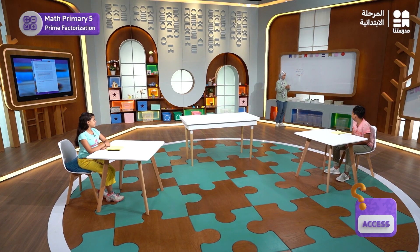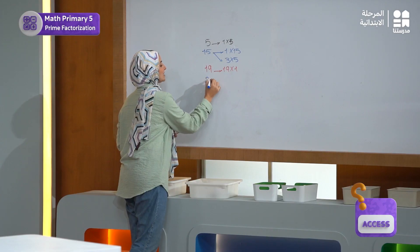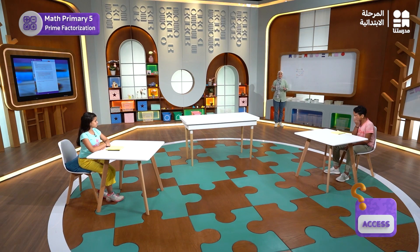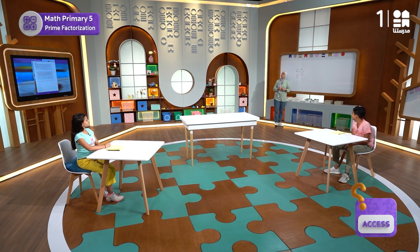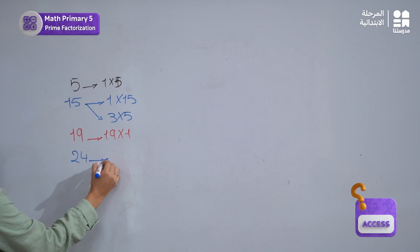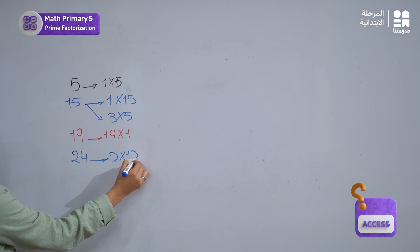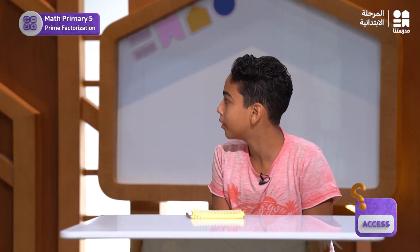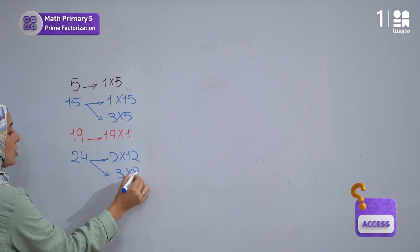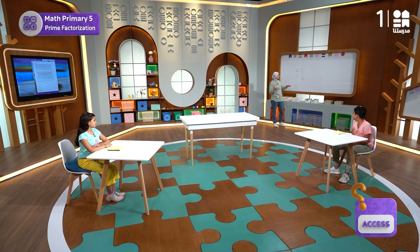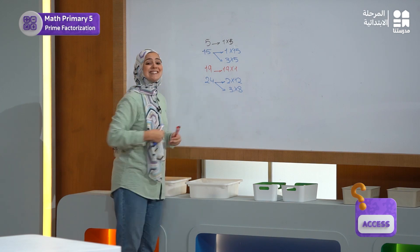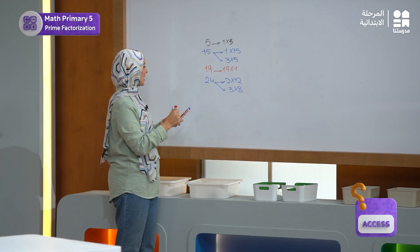Let's move on to the next number. What is our next number? 24. So are we going to stand or sit? Sit. Very good. Because 24 is a composite number. Can you give me two numbers that are factors of 24? 2 by 12. Excellent. What about you, Omar? 3 by 8. Excellent. These are some of the factors we can get for 24. Others are 24 and 1, and we can also have 6 and 4.